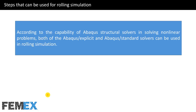According to the capability of Abaqus structural solvers in solving nonlinear problems, both Abaqus Explicit and Abaqus Standard solvers can be used in rolling simulation.